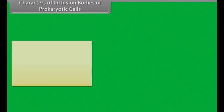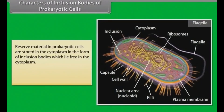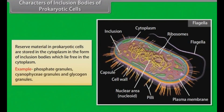Reserve material in prokaryotic cells is stored in the cytoplasm in the form of inclusion bodies, which lie free in the cytoplasm. Examples include phosphate granules, cyanophycean granules, and glycogen granules.